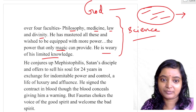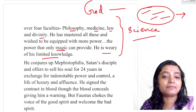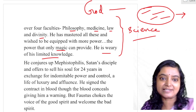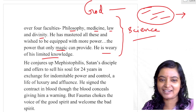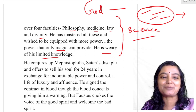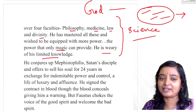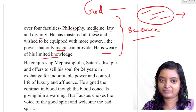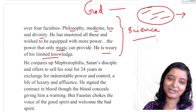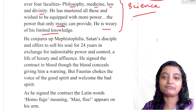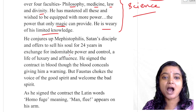And who is a Renaissance man? A Renaissance man is one who can even damn his soul to know what is beyond the syllabus. Faustus is that damned soul — that audacious, indomitable, and determined soul who wants to go beyond the syllabus of God, to know what is beyond it, even at the cost of his own soul, even at the cost of his own damnation. So he conjures Mephistopheles, Satan's disciple, and offers to sell his soul for 24 years in exchange for indomitable power, control, and a life of luxury and affluence.